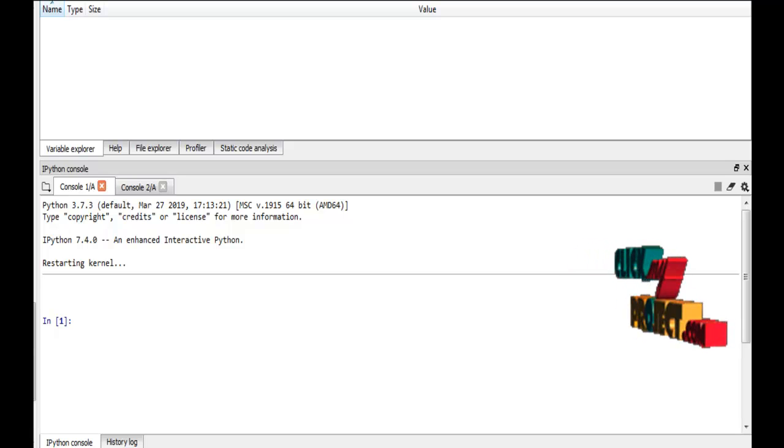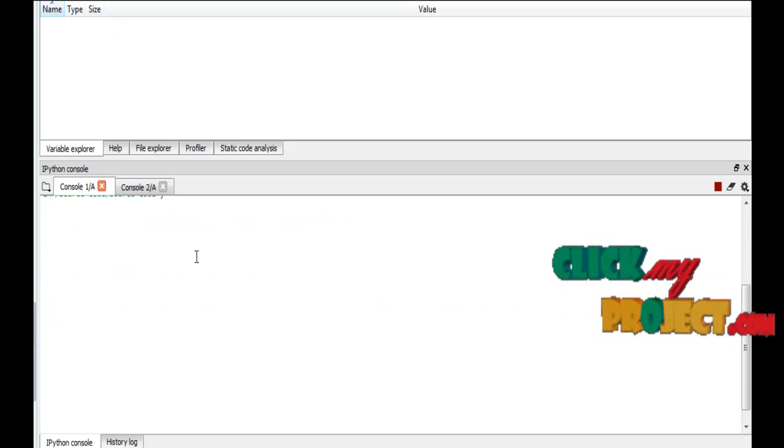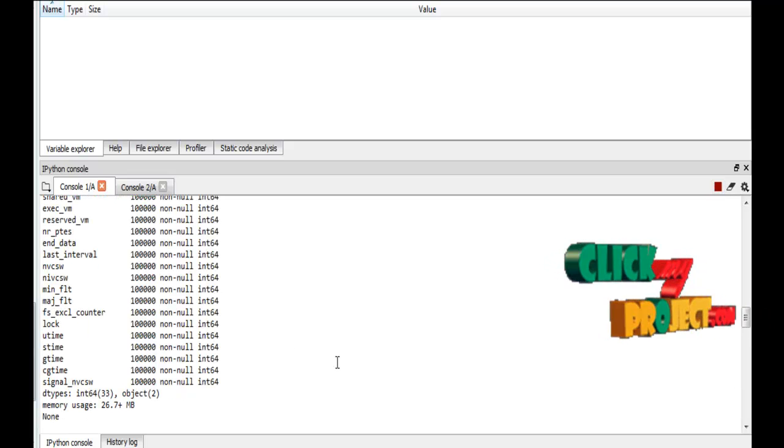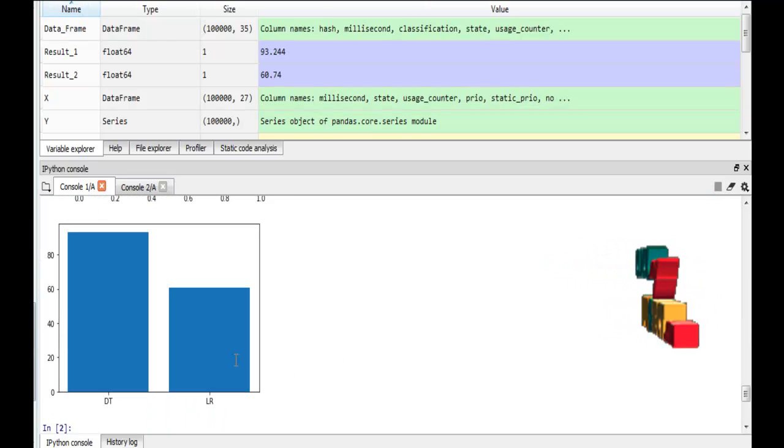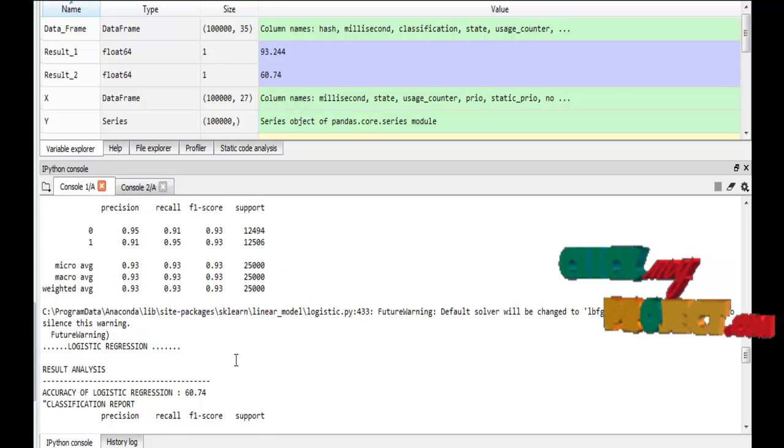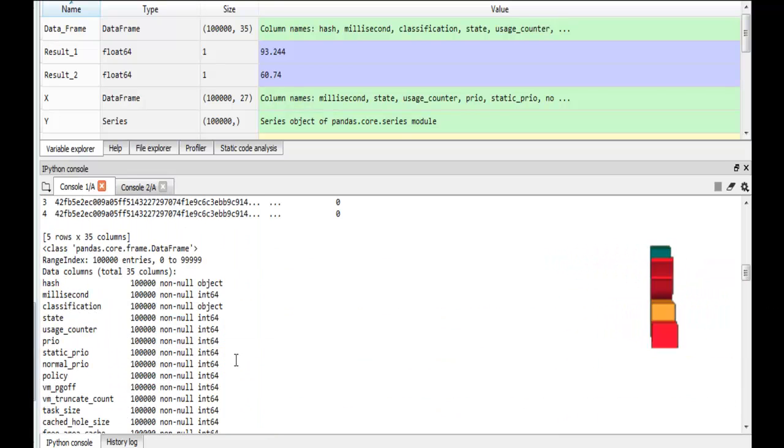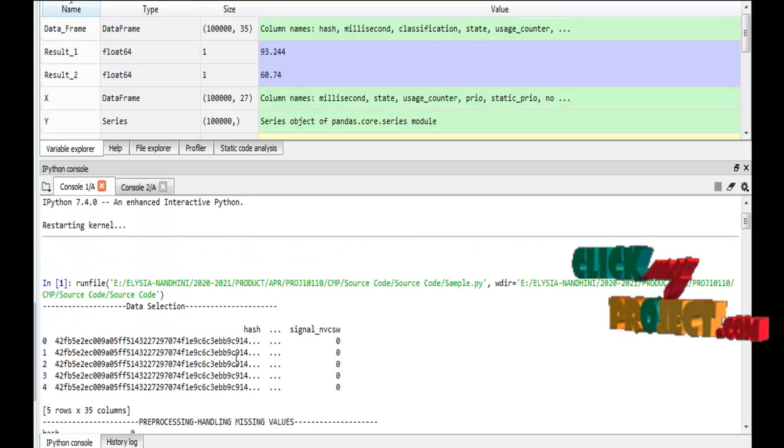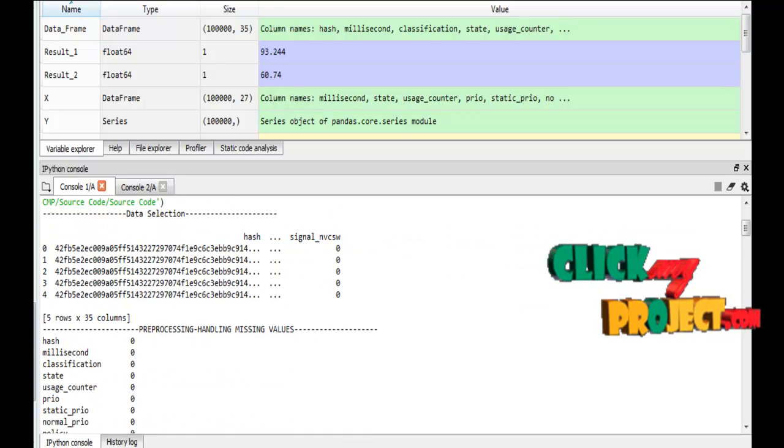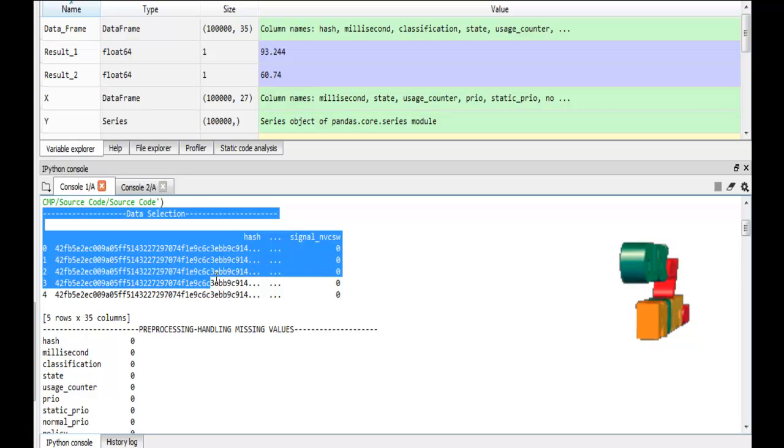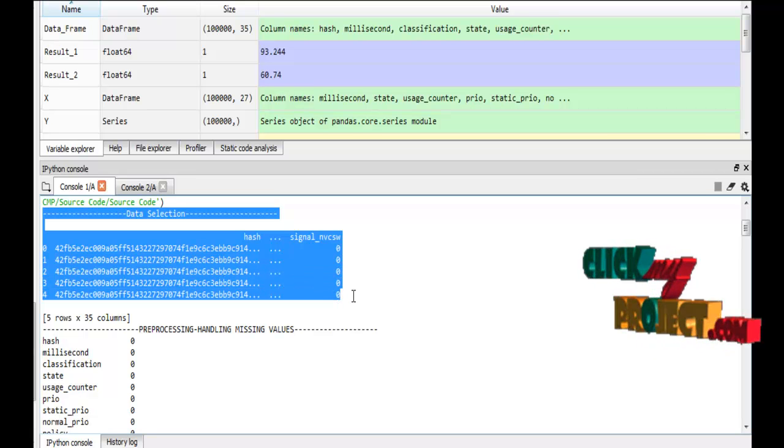Here, I have just run our process. Our program is running. Successfully, our program is run. Just I have to explain. This is our dataset. Here, I have the sample data selection in our output part.